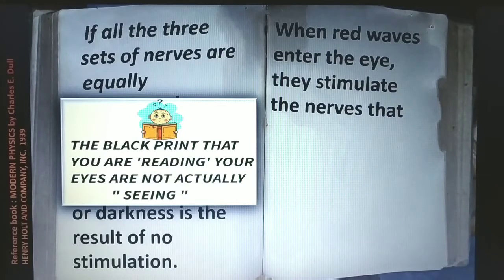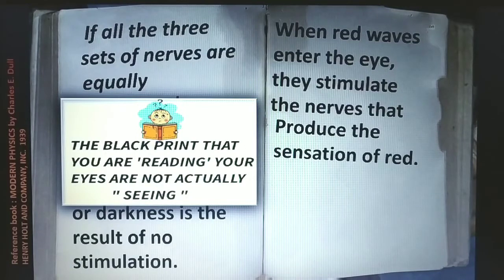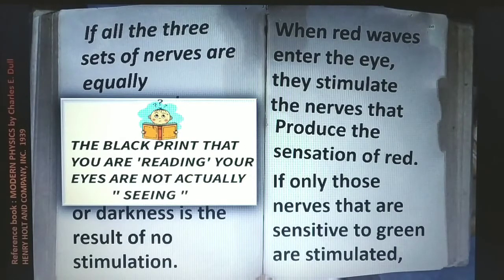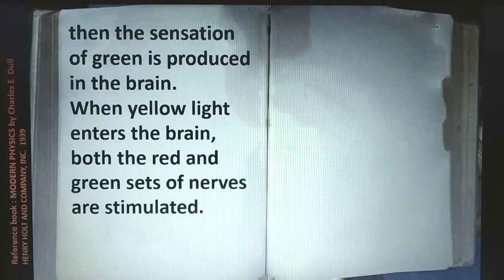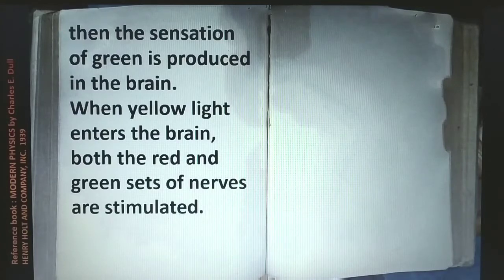When red waves enter the eye, they stimulate the nerves that produce the sensation of red. If only those nerves sensitive to green are stimulated, then the sensation of green is produced in the brain. When yellow light enters the eye, both the red and the green sets of nerves are stimulated, because yellow is a secondary color — yellow equals green plus red. Green, blue, and red are primary colors of light; cyan, magenta, and yellow are secondary colors, obtained by adding two primary colors.